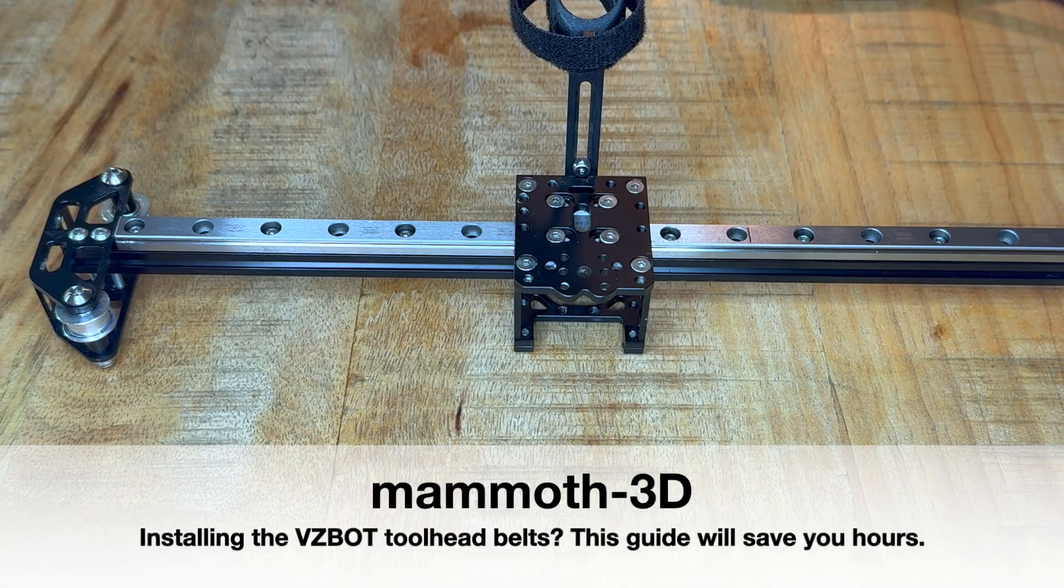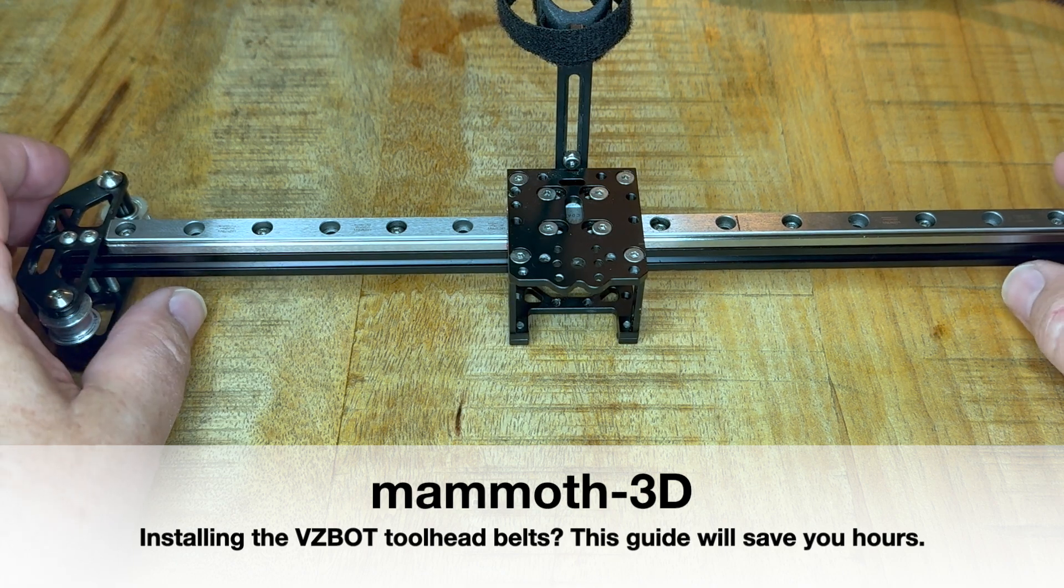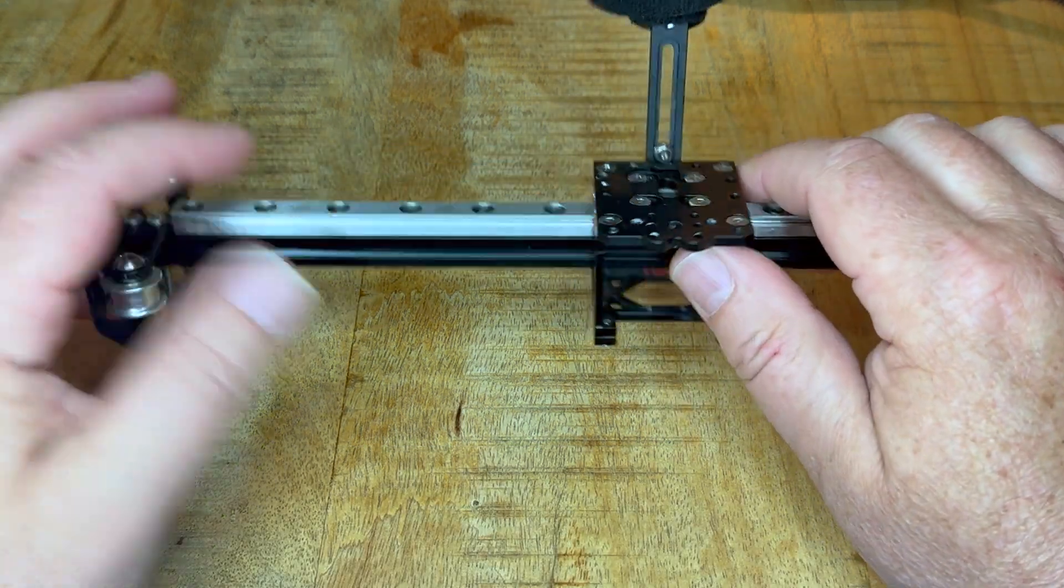I would like to, in a short video, explain the belts for the Mammoth AWD and VZBot toolhead.